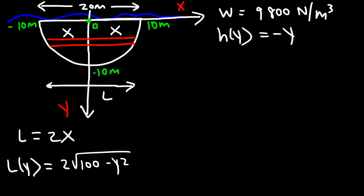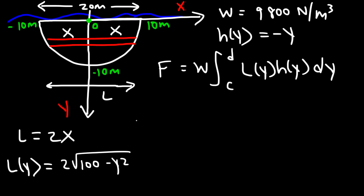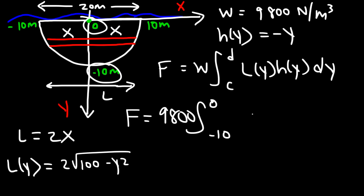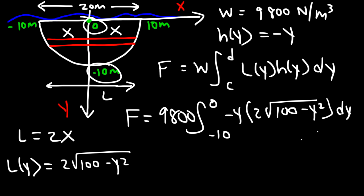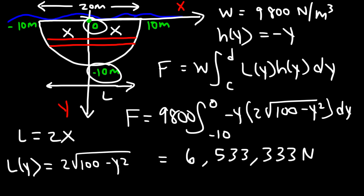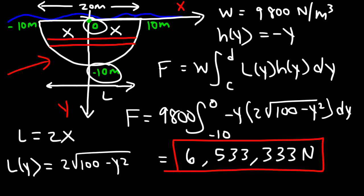Now we write the fluid force expression: weight density times the integral from c to d of l(y) times h(y) dy. With weight density 9800, c = negative 10, d = 0, h(y) = negative y, and l(y) = 2√(100 − y²). Typing this into a calculator gives 6,533,333 newtons — that's the hydrostatic fluid force on the semicircular plate.